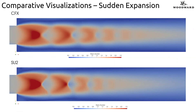We'll finish with some comparative visualizations. Looking now at the sudden expansion from the flexible hose to the inlet pipe, with CFX on top and SU2 on the bottom, visualizing Mach number. We see very similar shock patterns from that sudden expansion. Perhaps a little bit clearer definition of the highest velocity regions at that first shock region for SU2, and maybe a little bit longer propagation downstream in the case of CFX. But generally the patterns are very similar, which you'd of course hope and expect to see.